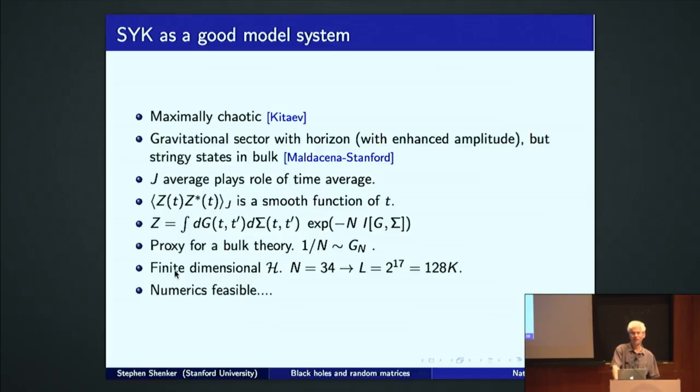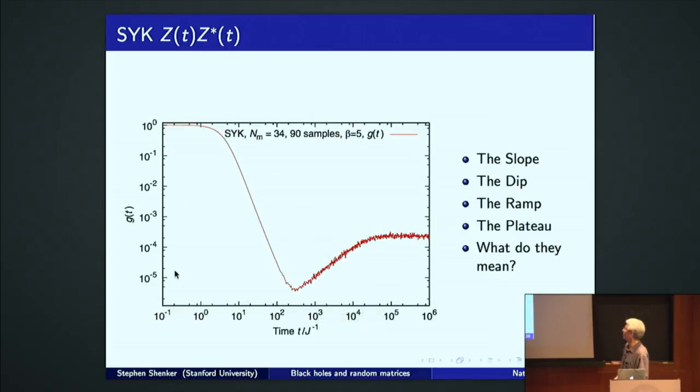This is ZZ star for the Sachdev-Ye-Kitaev model. This is a log-log plot. This is a million time steps. This is an exponentially large range. This is ZZ star normalized, so at time equals zero, it's one. And I have to tell you, we've been staring at plots like this a lot the last 10 months. So, we've had to give names to this topography. Okay. We call this the slope.